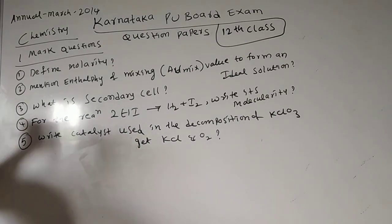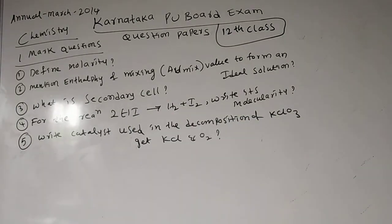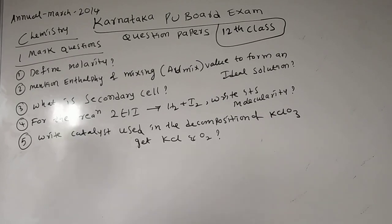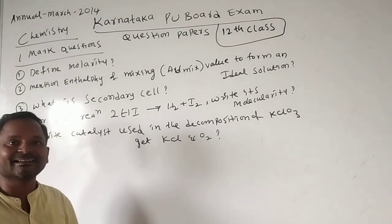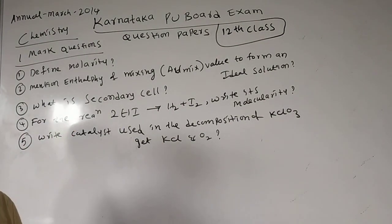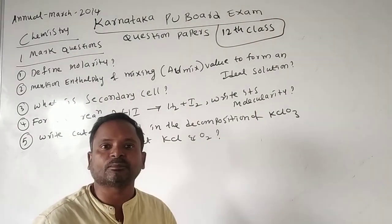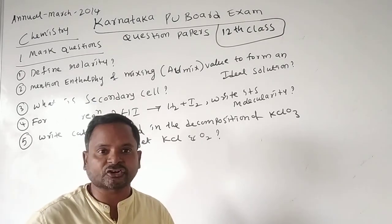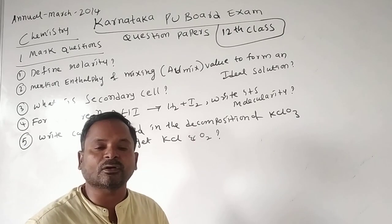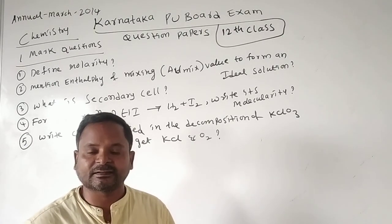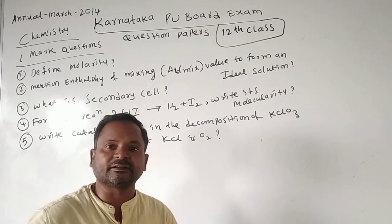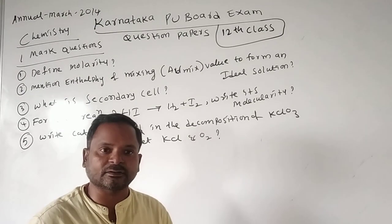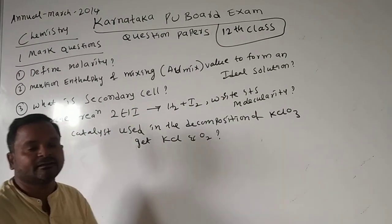Third question: what is a secondary cell? Cells are two types — rechargeable cells and non-rechargeable cells. Cells which are rechargeable repeatedly, we call as secondary cells. Cells which are not rechargeable are called primary cells. For example, torchlight batteries — we cannot recharge them, so those are primary batteries. Cell phone batteries are rechargeable — we recharge them again and again — such cells we call as secondary cells.